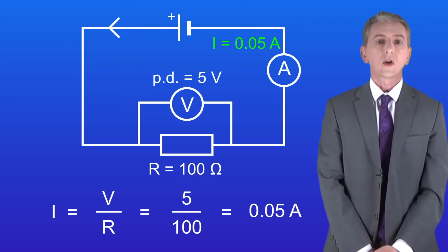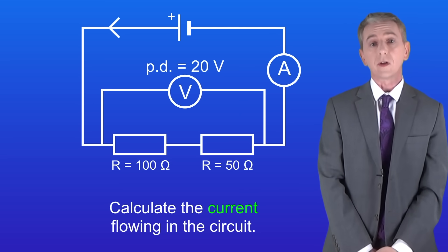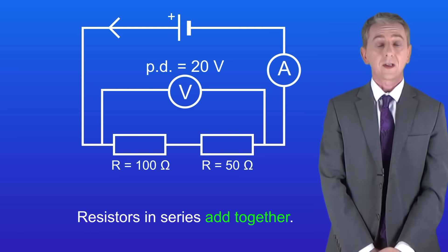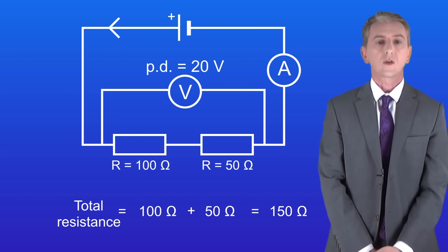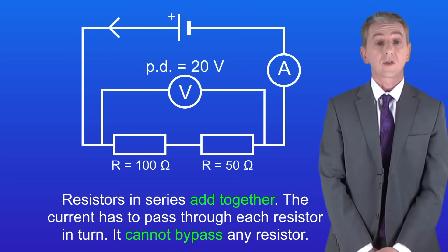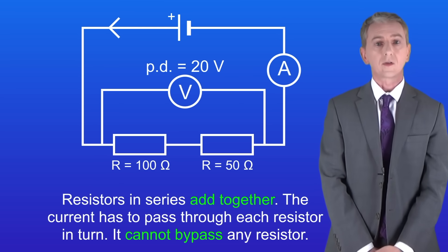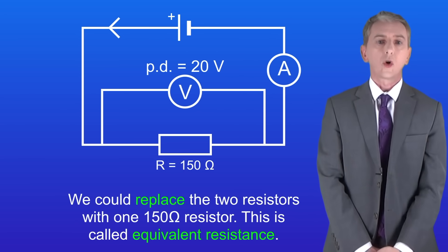Now in this video we're looking at circuits which contain more than one resistor. Let's start by looking at resistors in series. Here we've got a 100 ohm resistor in series with a 50 ohm resistor. The potential difference is 20 volts and we've got to calculate the current. The key fact you need to learn is that resistors in series add together, so the total resistance is 150 ohms. That's because the current has to pass through each resistor in turn — it cannot bypass any resistor. We could replace these two resistors with one 150 ohm resistor. Scientists call this equivalent resistance.